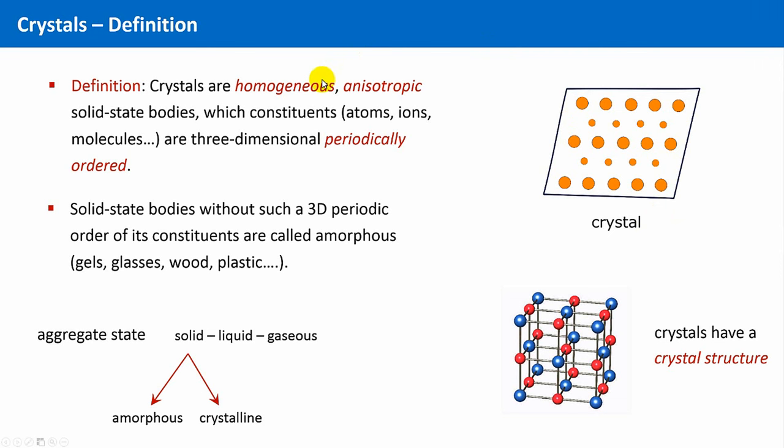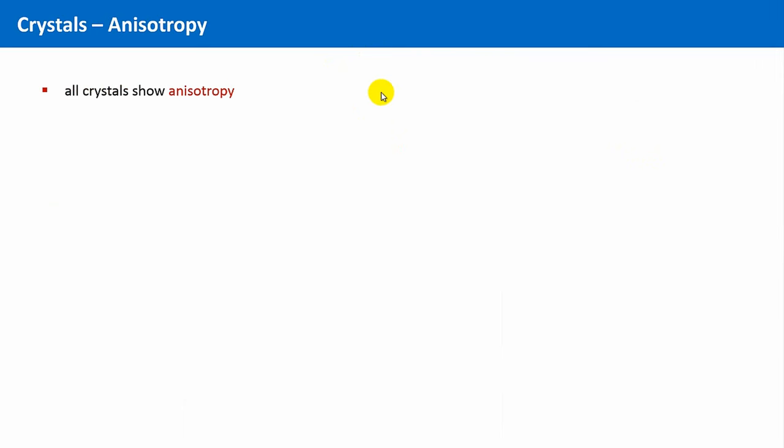Okay, what homogeneous means should be immediately clear. And we already have an imagination what 3D ordering could mean, but what anisotropic means is probably not clear. Let me give you a first explanation. All crystals show this feature called anisotropy. And this means that specific properties of a crystalline material are different for different directions. They are directional.